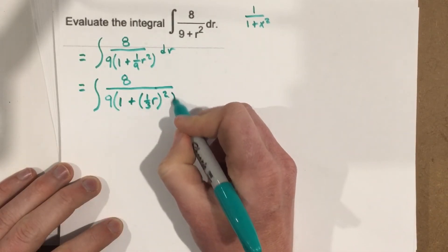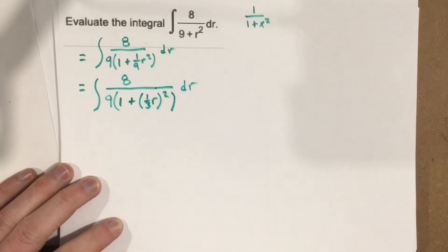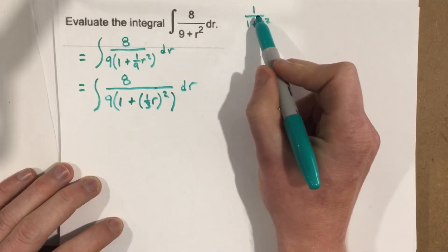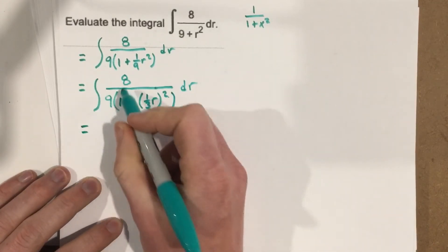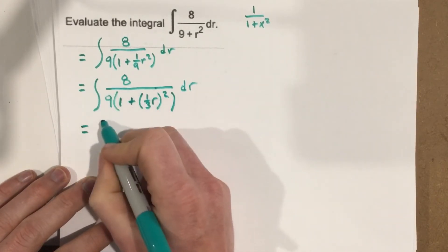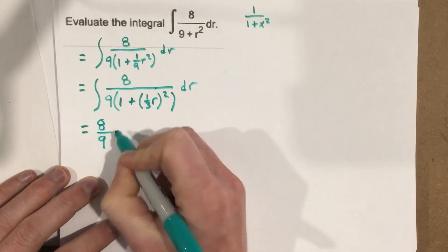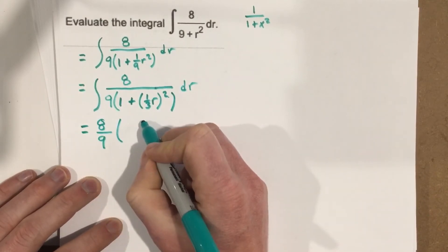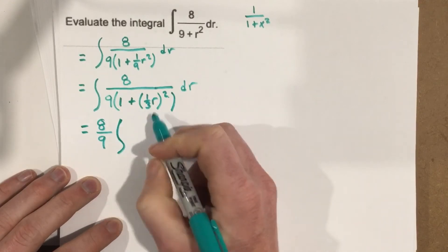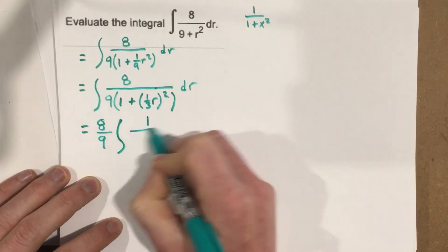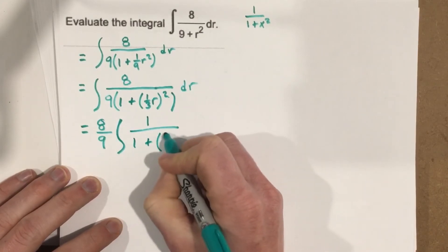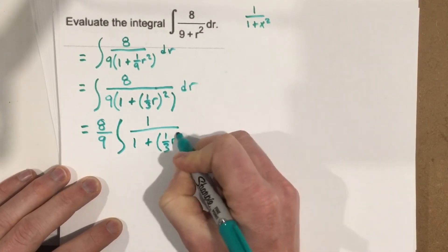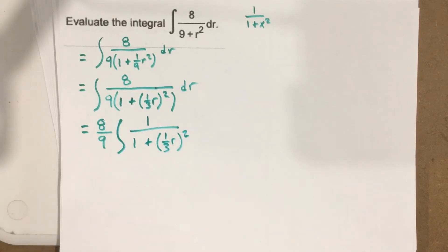So you can see I'm just manipulating this expression to get it to look closer to this. That's what we're looking for. I can actually then even write this. I can bring the 8 9ths out front. So I have 8 9ths. Let's get that out of there. And I have integral and then I would have just 1 over 1 plus 1 3rd r squared. And you can see how this is shaping up. So it's shaping up very nicely.